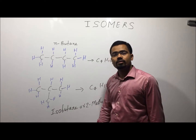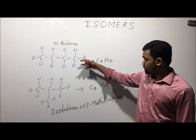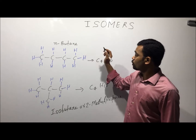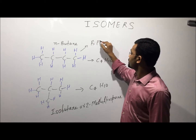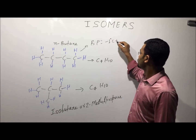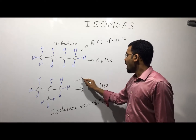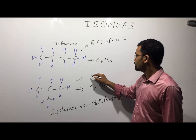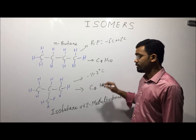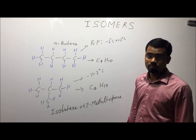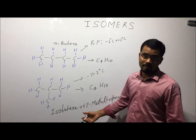Isomers have different physical and chemical properties. For example, normal butane has a boiling point of minus 1 degree Celsius, while isobutane has a boiling point of minus 11.7 degrees Celsius.